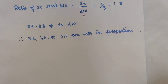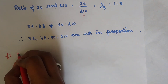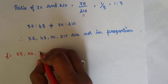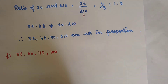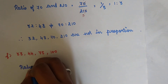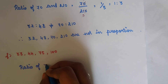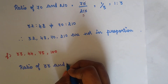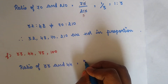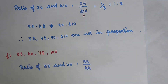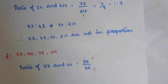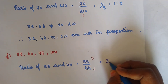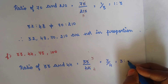Now let's move to subdivision C: 33, 44, 75 and 100. First we find the ratio of the first two numbers, 33 and 44. 33 divided by 44 gives 3 by 4 in fractional form. We write it in ratio form as 3 is to 4.